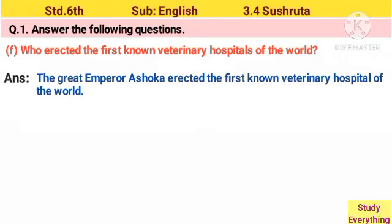F. Who erected the first known veterinary hospitals of the world? Answer: The great emperor Ashoka erected the first known veterinary hospital of the world.